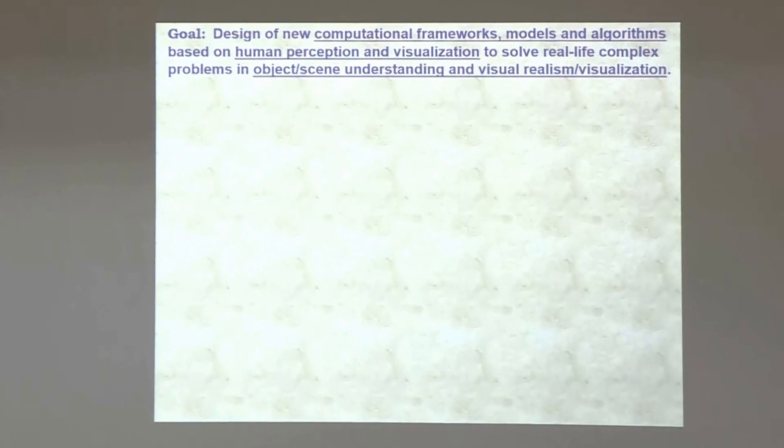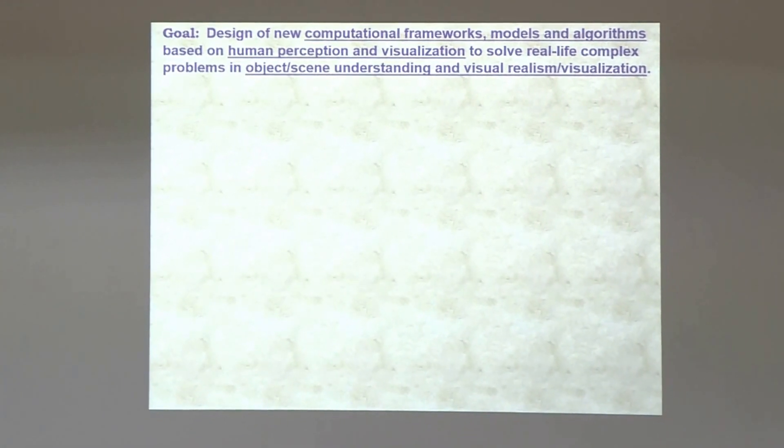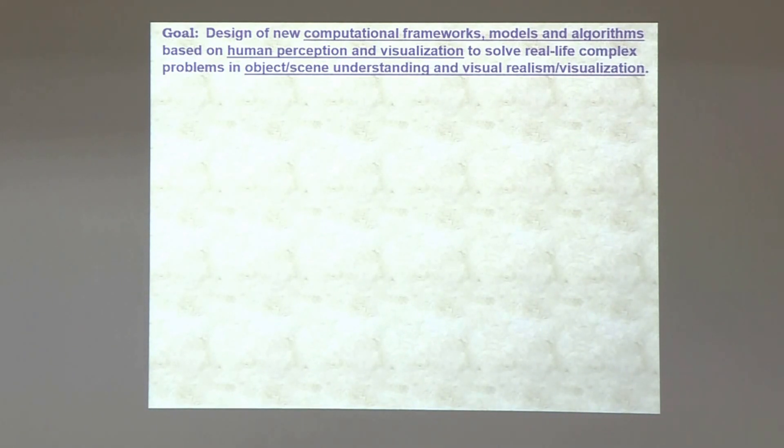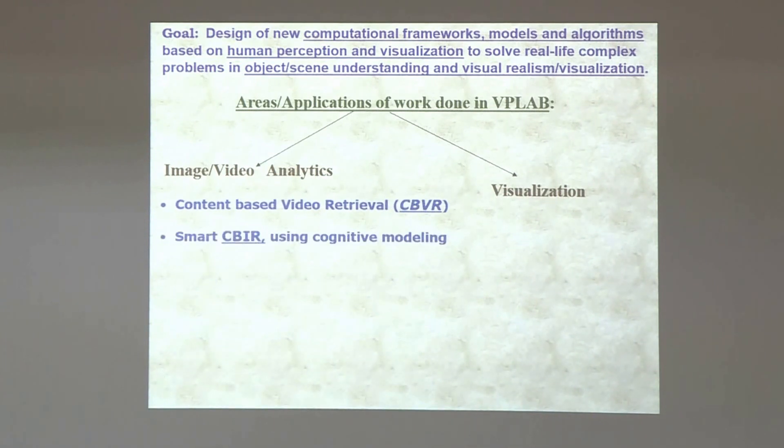This talk will be based on the activities in my lab, including recent work over just the last year on population range modeling with contractions and controlling domain. Our goal is to find comprehensible frameworks, models and algorithms using computational perception in analysis, as well as solving contextualized problems in understanding, visual realism and visualization.